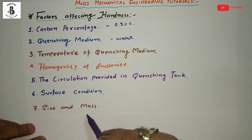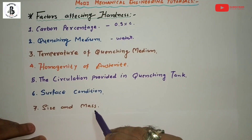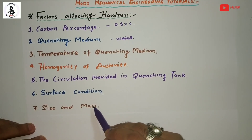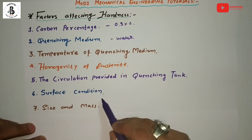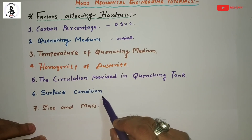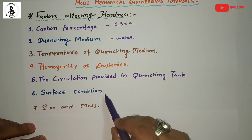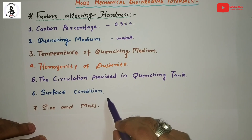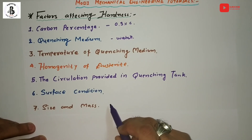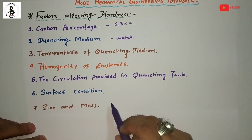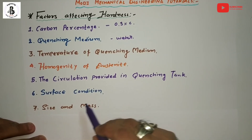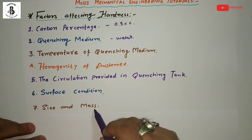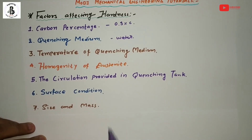Seventh factor: size and mass. Since only the surface is in contact with the quenching medium, the ratio of surface area to mass is very important in determining the actual cooling rate. This is also an important factor affecting hardness.